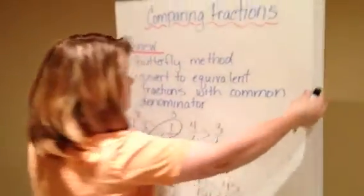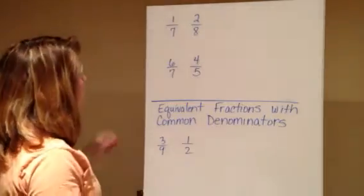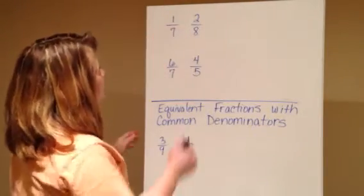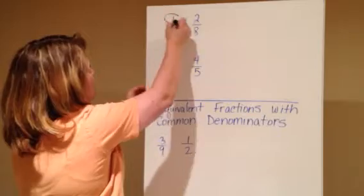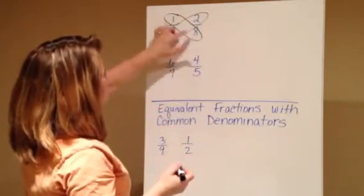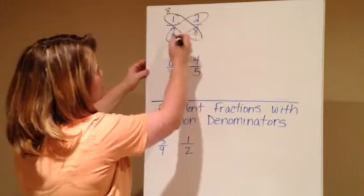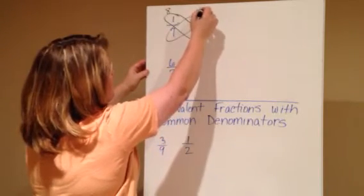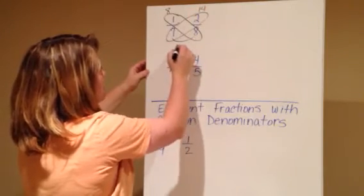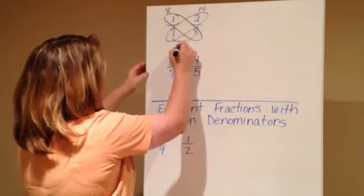Okay, I've got two more that we're going to practice using that method, and then we're going to take a look at the other one. So we have one-seventh and two-eighths. Again I'm going to put my loops. I'm going to do one times eight, which gives me eight. Two times seven, which gives me fourteen. And seven times eight — excuse me — which gives me fifty-six.